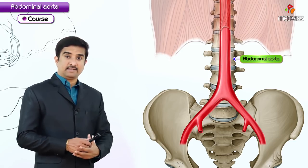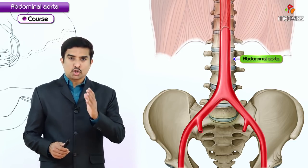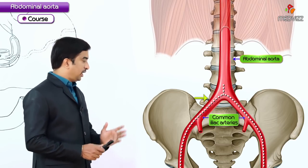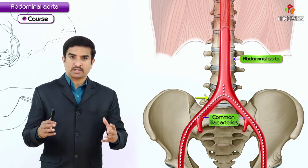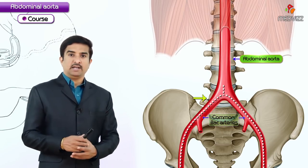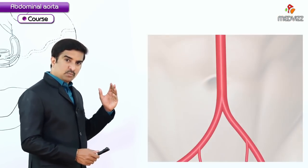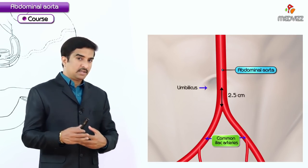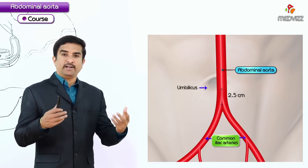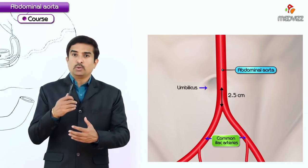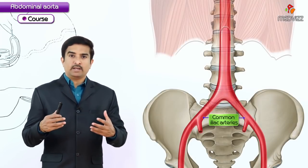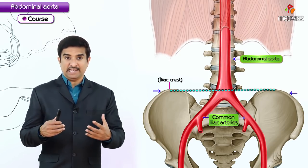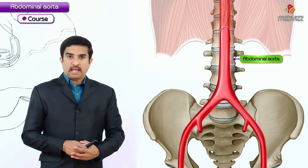The terminal branches of the abdominal aorta are the two common iliac arteries. This bifurcation can be best visualized on the anterior abdominal wall at a point approximately 2.5 centimeters below the umbilicus, or along a line extending between the highest points of the iliac crest.